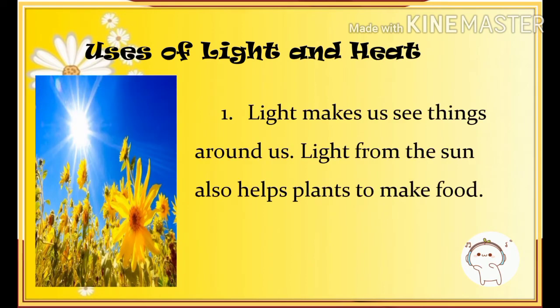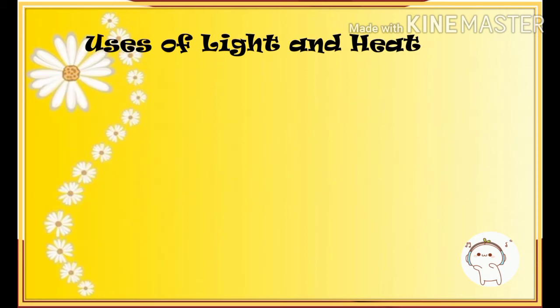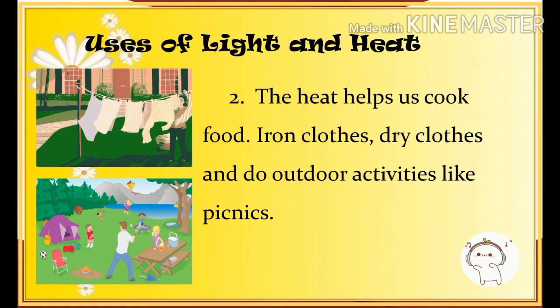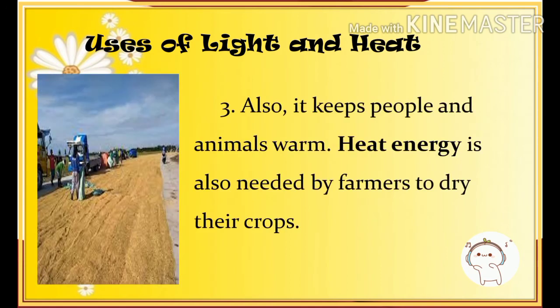First, light makes us see the things around us. Light from the sun also helps plants to make food. Second, heat helps us cook food, iron clothes, dry clothes, and do other activities like picnics. Lastly, heat also keeps people and animals warm, and heat energy is also needed by farmers to dry their crops.